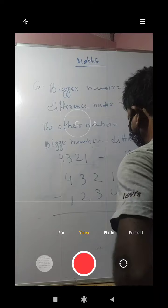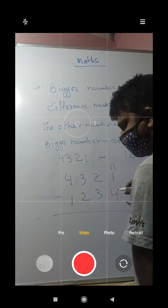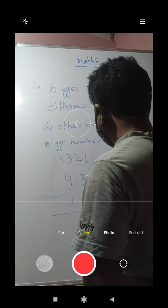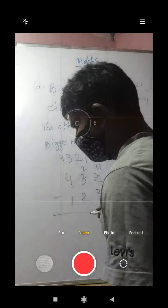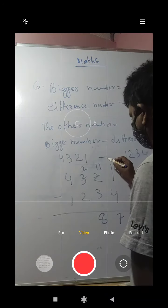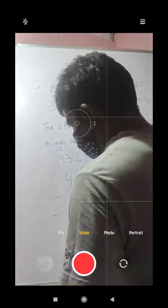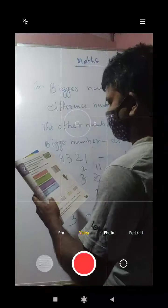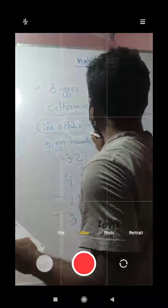Doing the subtraction: 1 is less than 4, so we borrow 1, making it 11. 11 minus 4 is 7. In the tens place, 1 is less than 3, so we borrow again, making it 11. 11 minus 3 is 8. Then 2 minus 2 is 0, and 4 minus 1 is 3. So the other number is 3087.